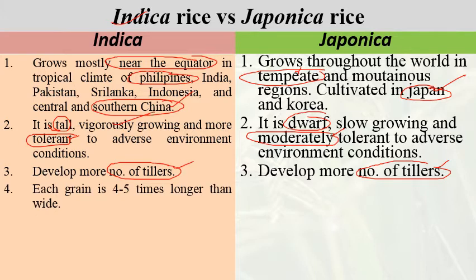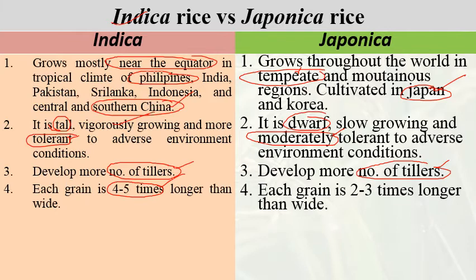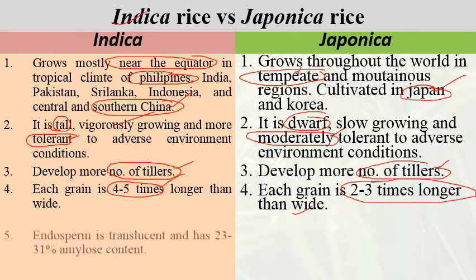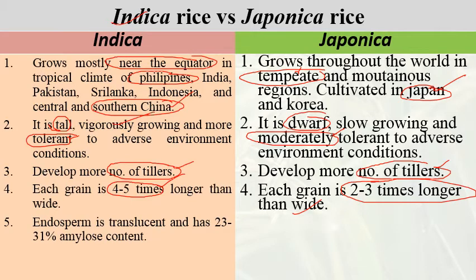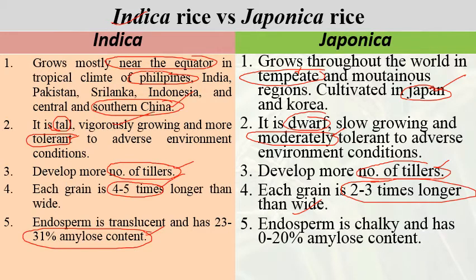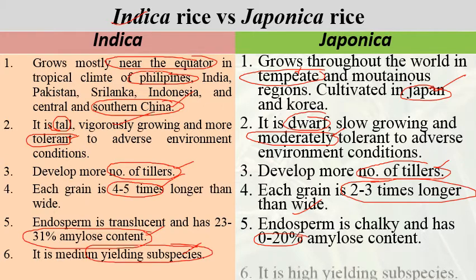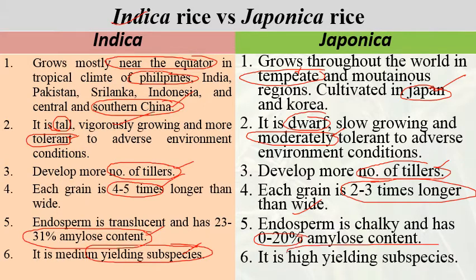In Indica rice, each grain is four to five times longer than its width, while in Japonica rice each grain is two to three times longer than its width. The endosperm of Indica rice is translucent with 23 to 31 percent amylose content, whereas Japonica rice has 0 to 20 percent amylose content. Indica is a medium-yielding subspecies, while Japonica is a high-yielding subspecies. These are the key differences between Indica and Japonica rice.